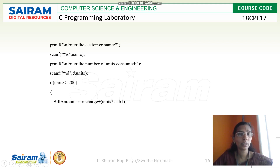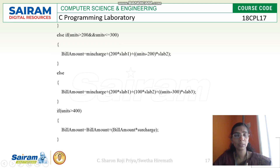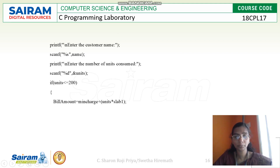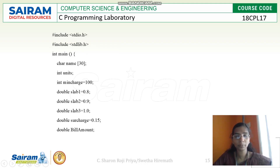If units is less than 200, it falls in the first slab — 80 paisa. So the bill amount will be minimum charge plus units into slab1. Slab1 is 80 paisa. Every user also has the minimum charge added to their bill.